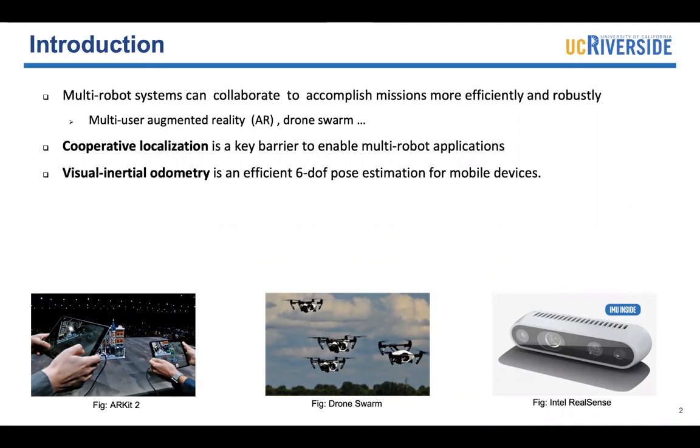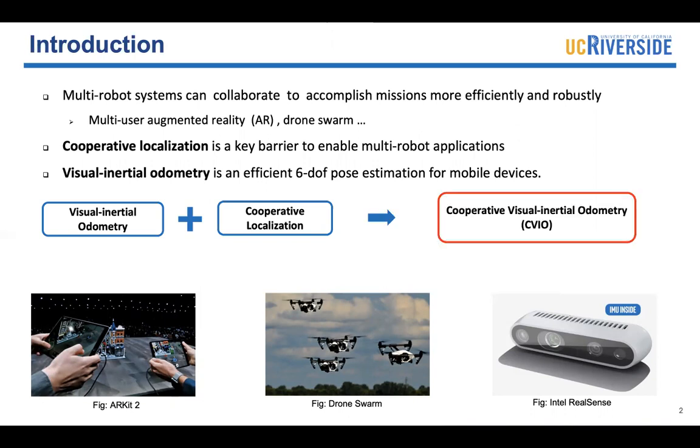On the other hand, visual inertial sensors are cheap and lightweight. As a result, they have been widely used to estimate the poses for mobile devices. In this paper, we use visual inertial sensors to achieve cooperative localization and we propose the cooperative visual inertial odometry algorithms. In our algorithm, we make use of the commonly observed features to improve the accuracy.